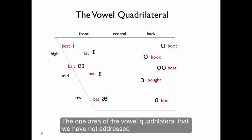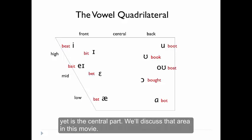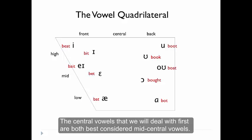The one area of the vowel quadrilateral that we haven't addressed yet is the central part. We'll discuss that area in this movie. The central vowels that we'll deal with first are both best considered mid-central vowels.